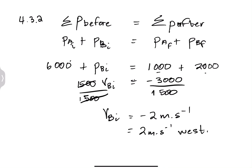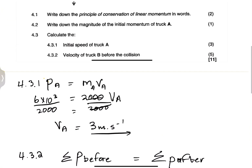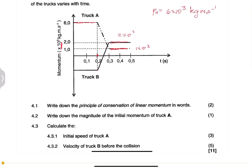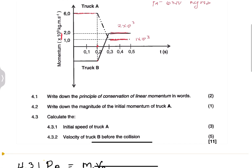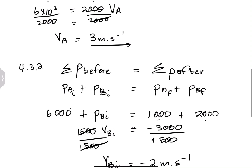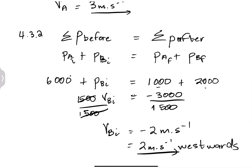The negative sign tells us that Truck B was moving westwards — since we took eastwards as positive, the negative means westwards at 2 m/s. That's how this question works out. It's straightforward even though the information was given as a graph. I hope you enjoyed this section — you're going to maximize the marks here. Please don't forget to like, share, and tell as many people. Your favorite uncle is always dishing out good content. See you next time!